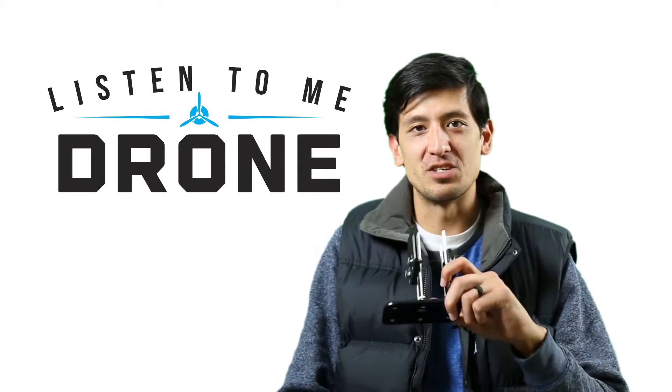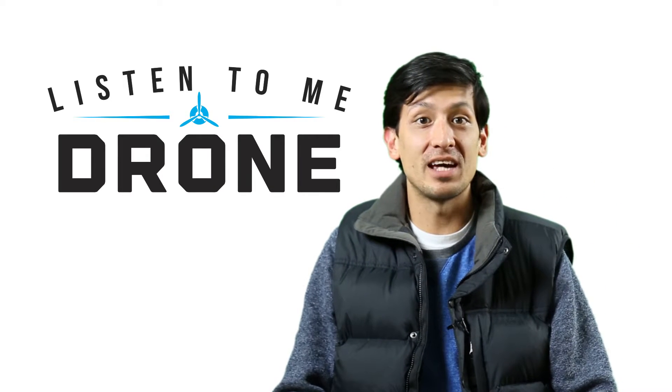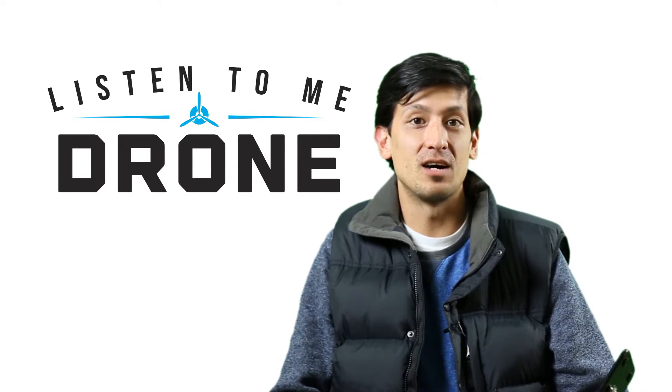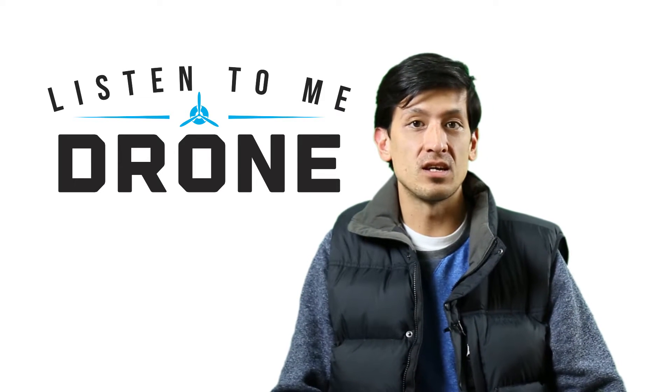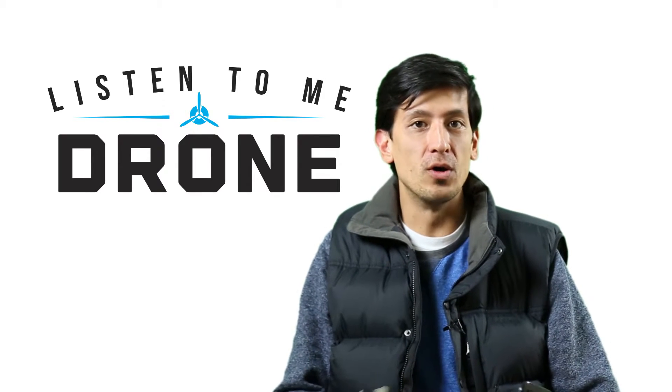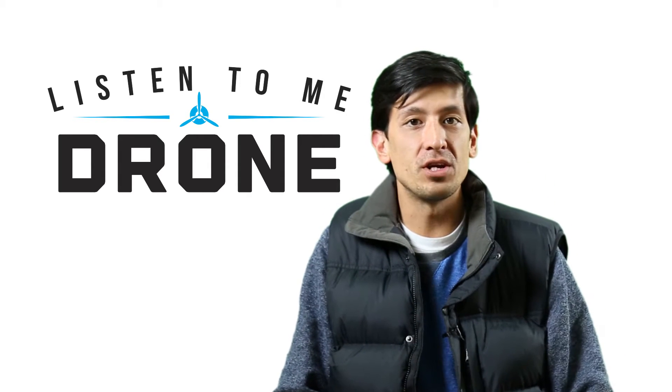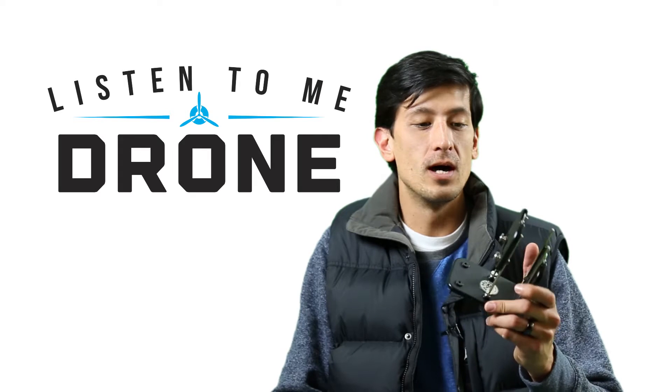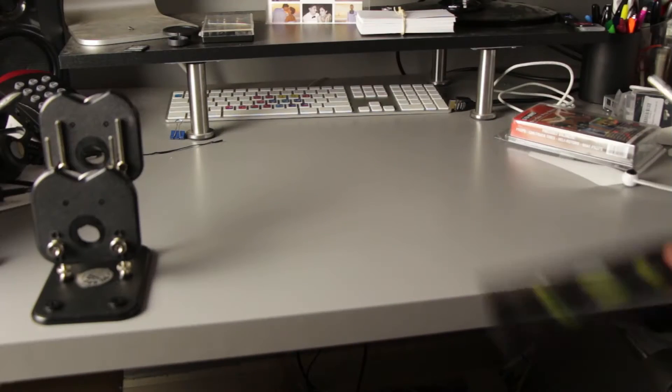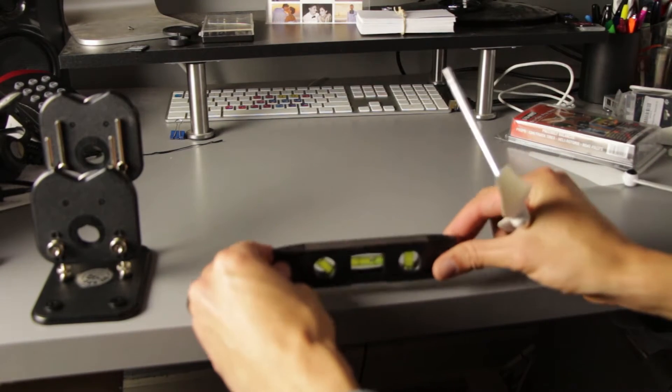Hey there, thanks for tuning in to Listen to Me Drone. What we're going to talk about today is an extension of what I talked about last time, using the Polar Pro lens neutral density filter on your GoPro to help eliminate some of that jello effect and the vibrations that you see in your video when you're flying your Phantom 2 shooting video.